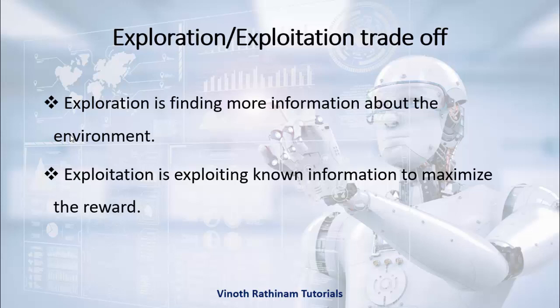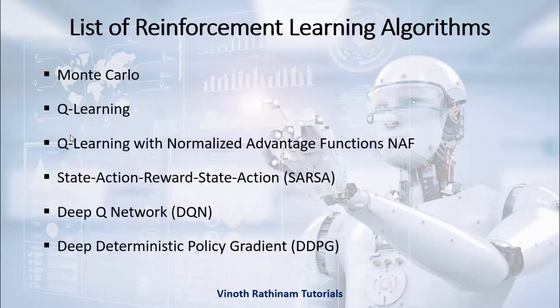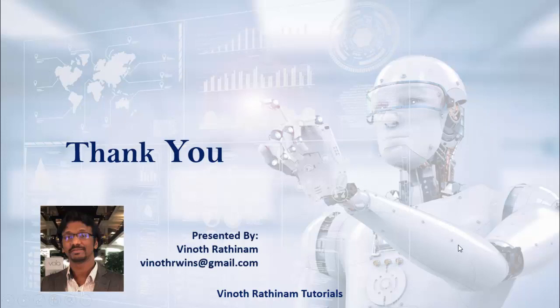Another important terminology is the exploration and exploitation trade-off. Apart from giving importance to the agent and the algorithm, we have to give more importance to the environment — we must analyze everything about the environment so that this will help us maximize the rewards and avoid penalties. Some important reinforcement learning algorithms include Monte Carlo, SARSA, Deep Q-Network (DQN), and DDPG. Based on your requirement you have to choose the proper algorithm. That's the end of today's session. In case of any clarification please mail me or ping me on my LinkedIn ID. Thanks for watching — happy learning!